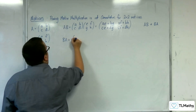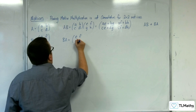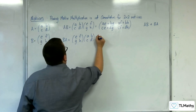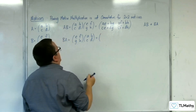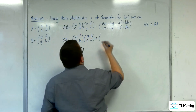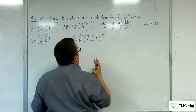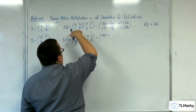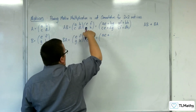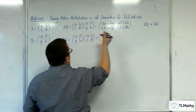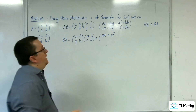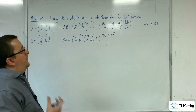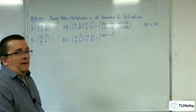BA is EFGH times ABCD. So we have EF times AC — writing it in alphabetical order — so E times A is AE, and F times C is CF. So we can see that the AEs are similar in this entry, but CF does not necessarily have to be equal to BG.